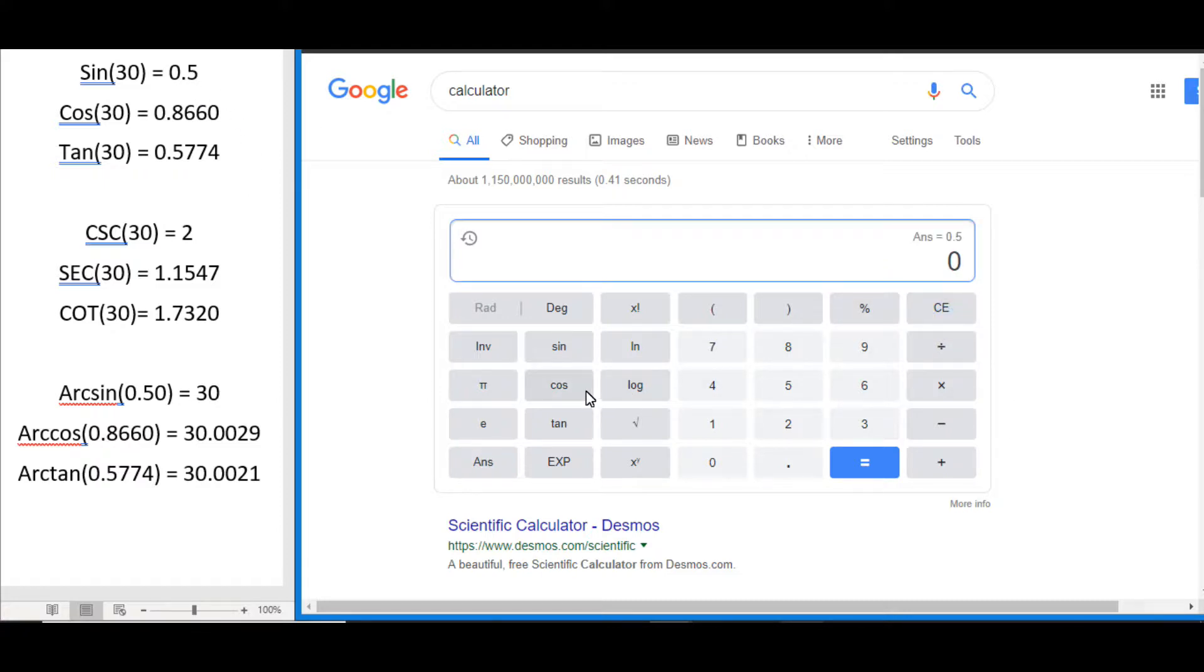For cosine, again just hit cos and 30 equals 0.8660, yep that's correct. And for tan as well, we just go tan 30 equals and 0.5773 etc. Yep, this one's rounded to 4 but yeah we got the same answer. So that's all good and easy.